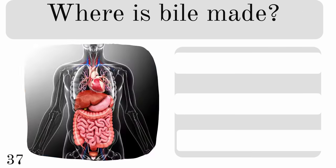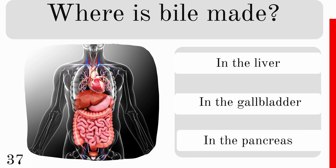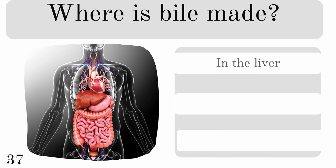Where is bile made? Is it in the liver, gallbladder or pancreas? And the correct answer is it's made in the liver and stored in the gallbladder.